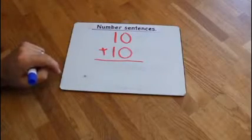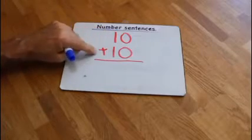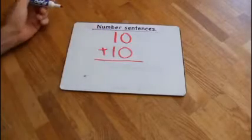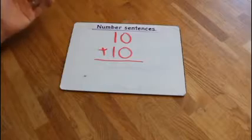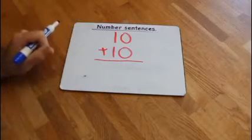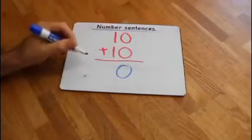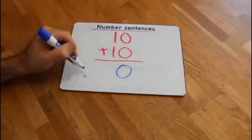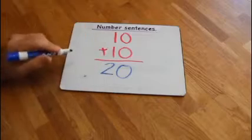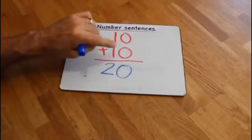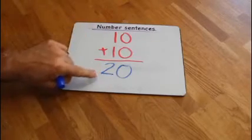Number sentences - you guys have been having fun all year with these, so here we go with 10 plus 10 equals. Do your mental math. What's zero plus zero? Zero. What's one plus one? Two. Ten plus ten equals twenty.